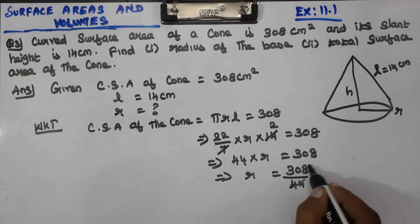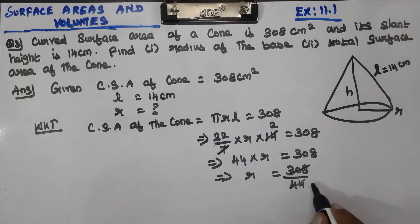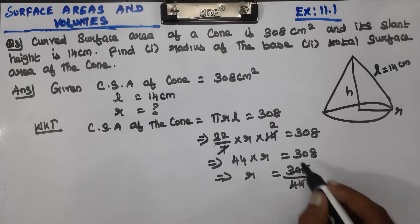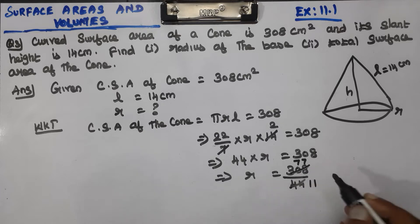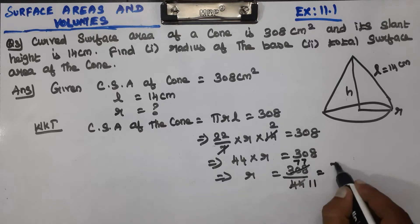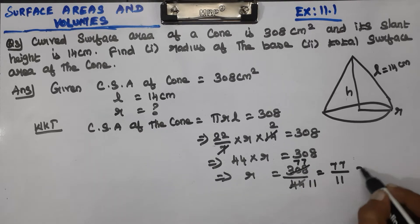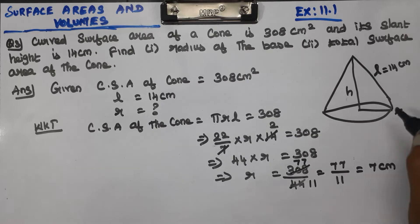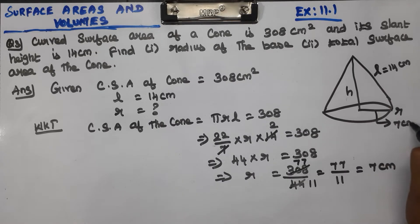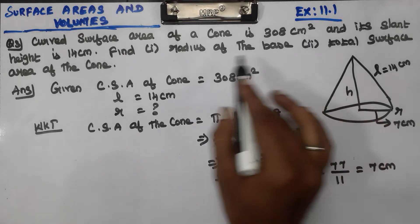Now let's see here — the 7s will cancel out. 4 times 4 is 44 — wait, 4 times 7 is 28. We get 308 divided by 44, which gives us R equals 7 cm. So we find the radius is 7 cm.